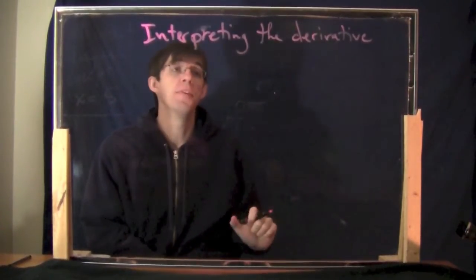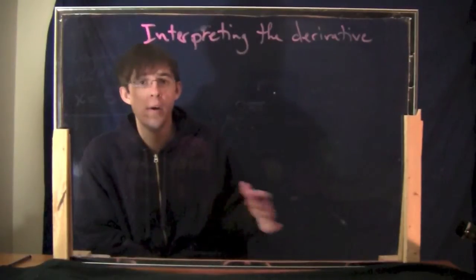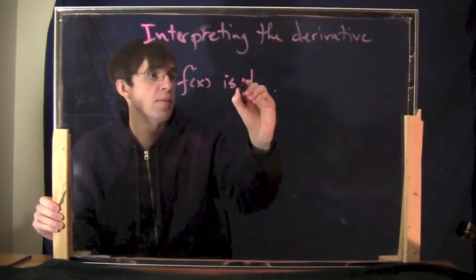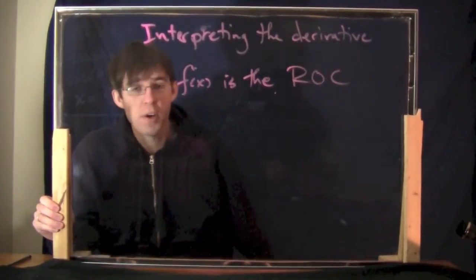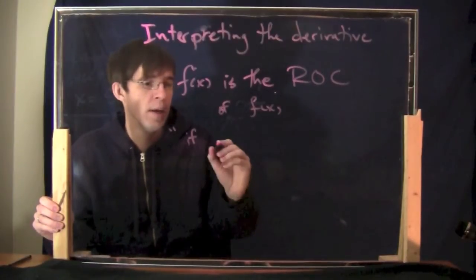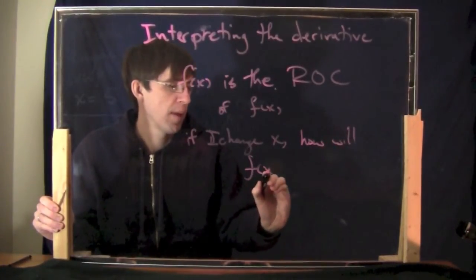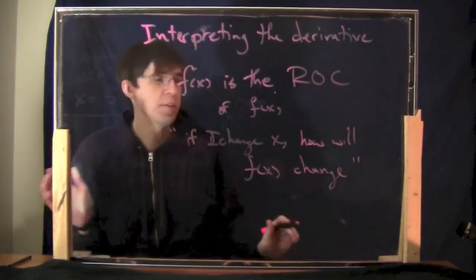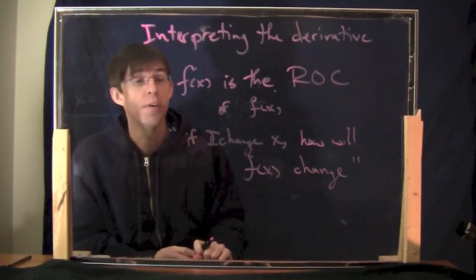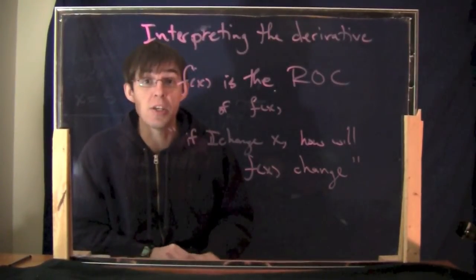Now that we know how to find the derivative, let's talk briefly about how to interpret it. What does the derivative mean in the real world in a word problem? The general thing is: f prime of x is the rate of change of f(x). More informally, if I change x, how will f(x) change? If you change the variable a little bit, how much will the values of the function change? I want to give three wildly different examples to illustrate all the ways in which the derivative is important in the real world.